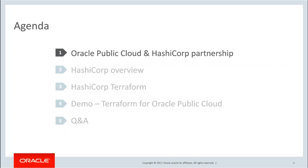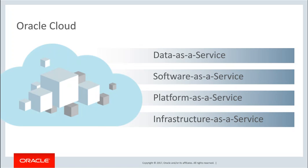Let me start with why we've been working with HashiCorp. I hope most people on the call are already familiar, at least at a high level, with the breadth of offerings in the Oracle Cloud — our data-as-a-service offerings, software-as-a-service with customer experience, human capital management, ERP, supply chain, and others. The platform services for Oracle Database and Java Cloud, as well as many other platform components and integration capabilities. And then our infrastructure-as-a-service, offering global compute, networking, storage, and other complementing capabilities, which is the main focus for today's session as we talk about provisioning the infrastructure.